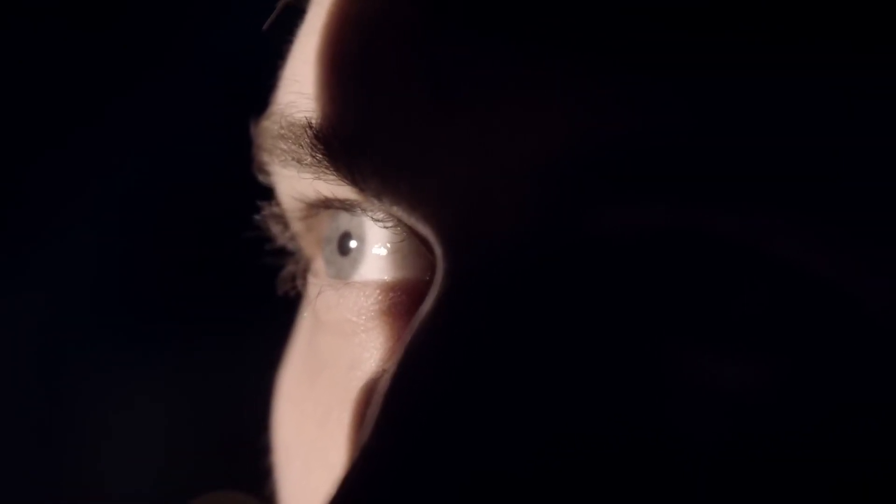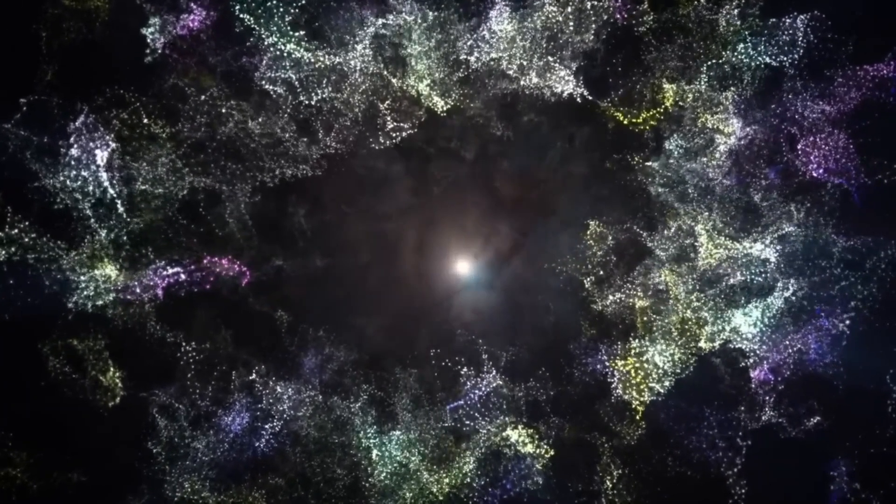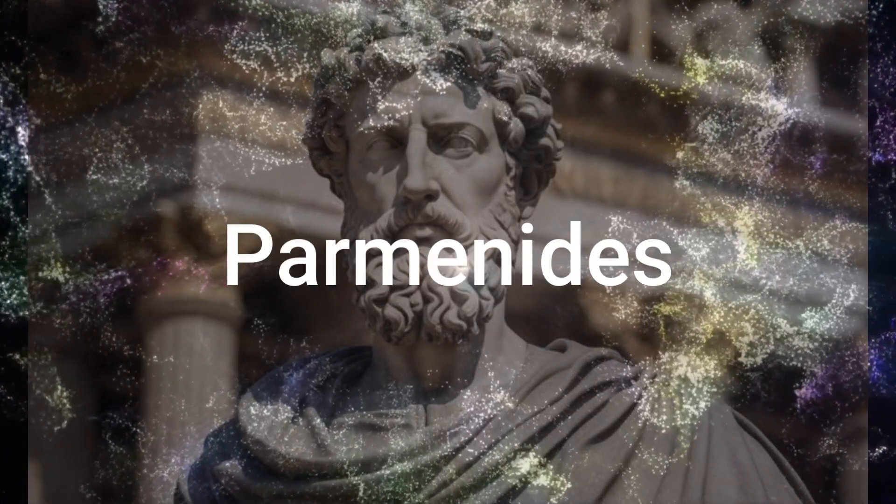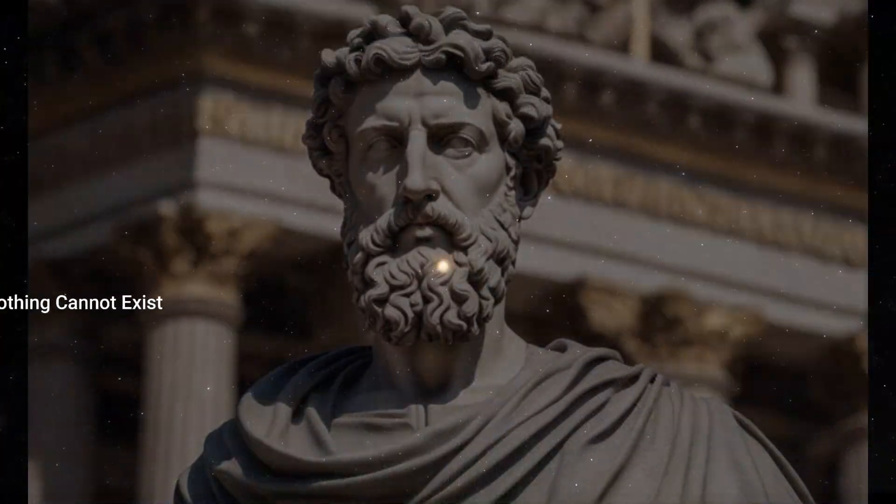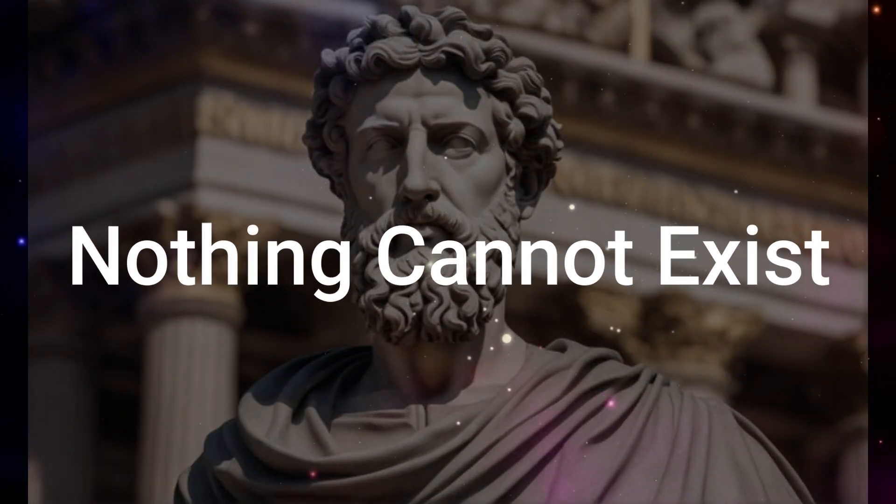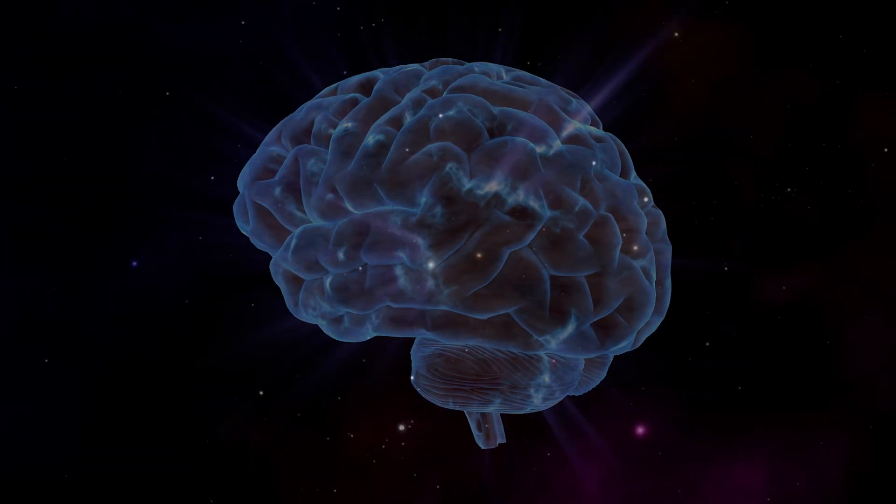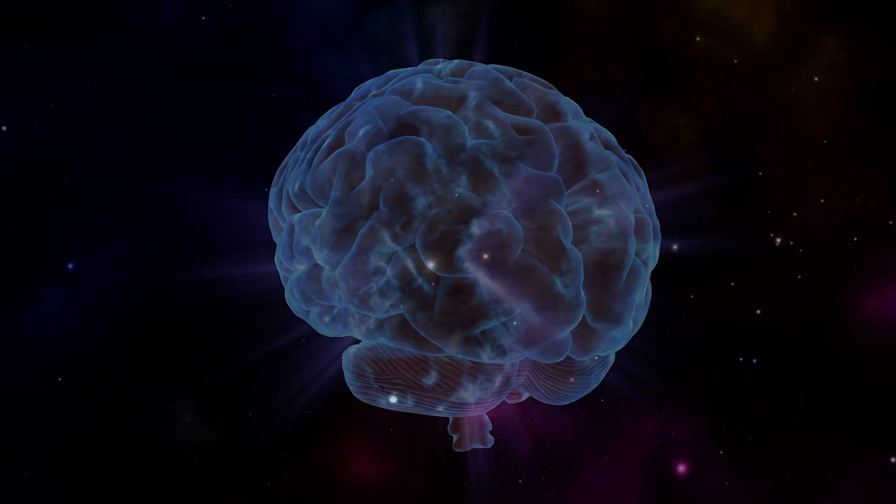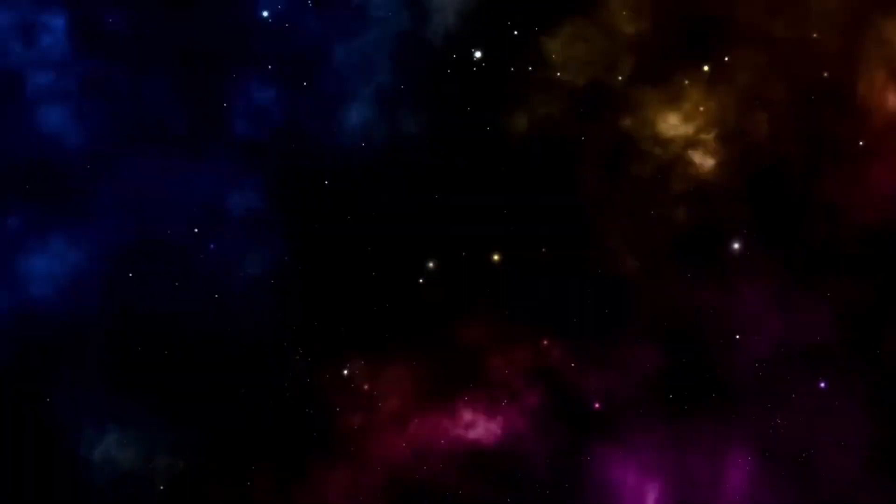Philosophers have long wrestled with this idea. One of the first to tackle the problem was Parmenides, who famously argued that nothing cannot exist. In his view, if we can think or speak of something, it must exist in some form. He believed that change itself was an illusion, because for something to change, it would have to come from or go into nothing, which is impossible.